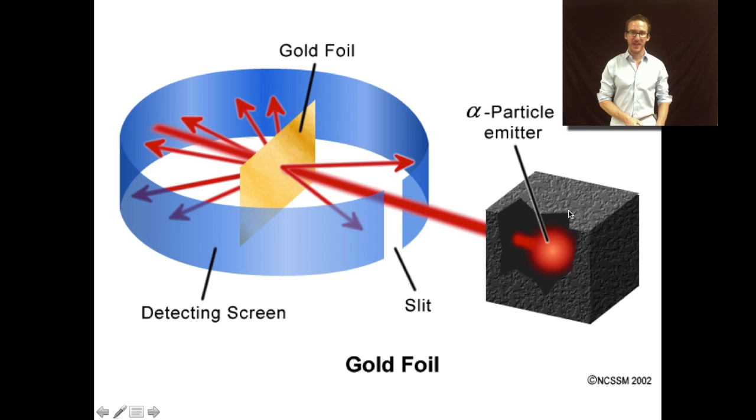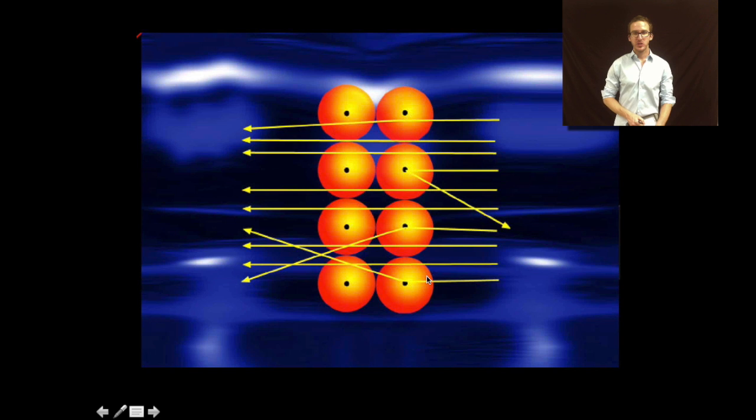Now, here's an image of the gold foil experiment. Rutherford took a source of alpha particles, or positively charged particles, and shot them at a very thin sheet of gold foil, only a few atoms thick. Now, he expected all of the alpha particles to shoot straight through, if Thompson's model was correct. But what blew his mind is that a few of those alpha particles were deflected, some at extreme angles. And he said to himself, I'm sorry, Thompson, you are wrong.